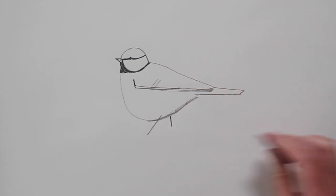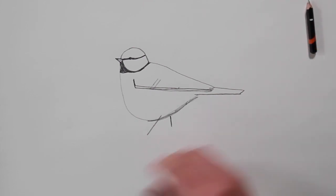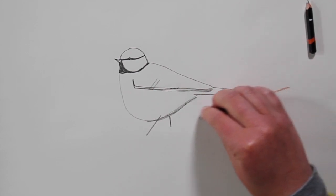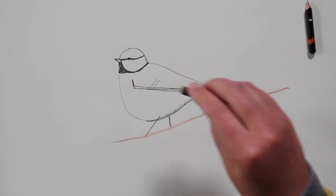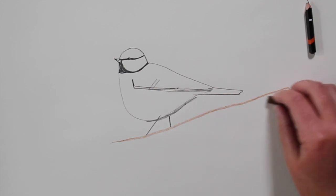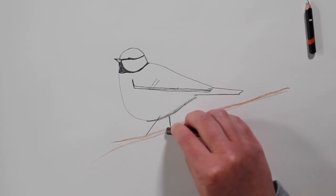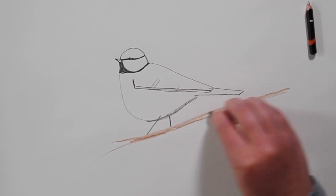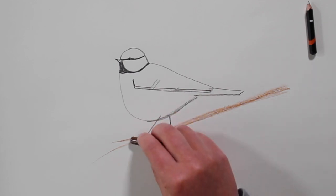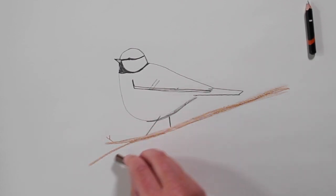And this blue tit is going to be on the very edge of a branch. So we're going to draw the branch next and take our brown crayon. And bring in a wiggly line here, just underneath the legs like that. And we want to make our branch a little bit thicker than that. And then the wispy bits at the end will just thicken up a little, a few twigs at the end.